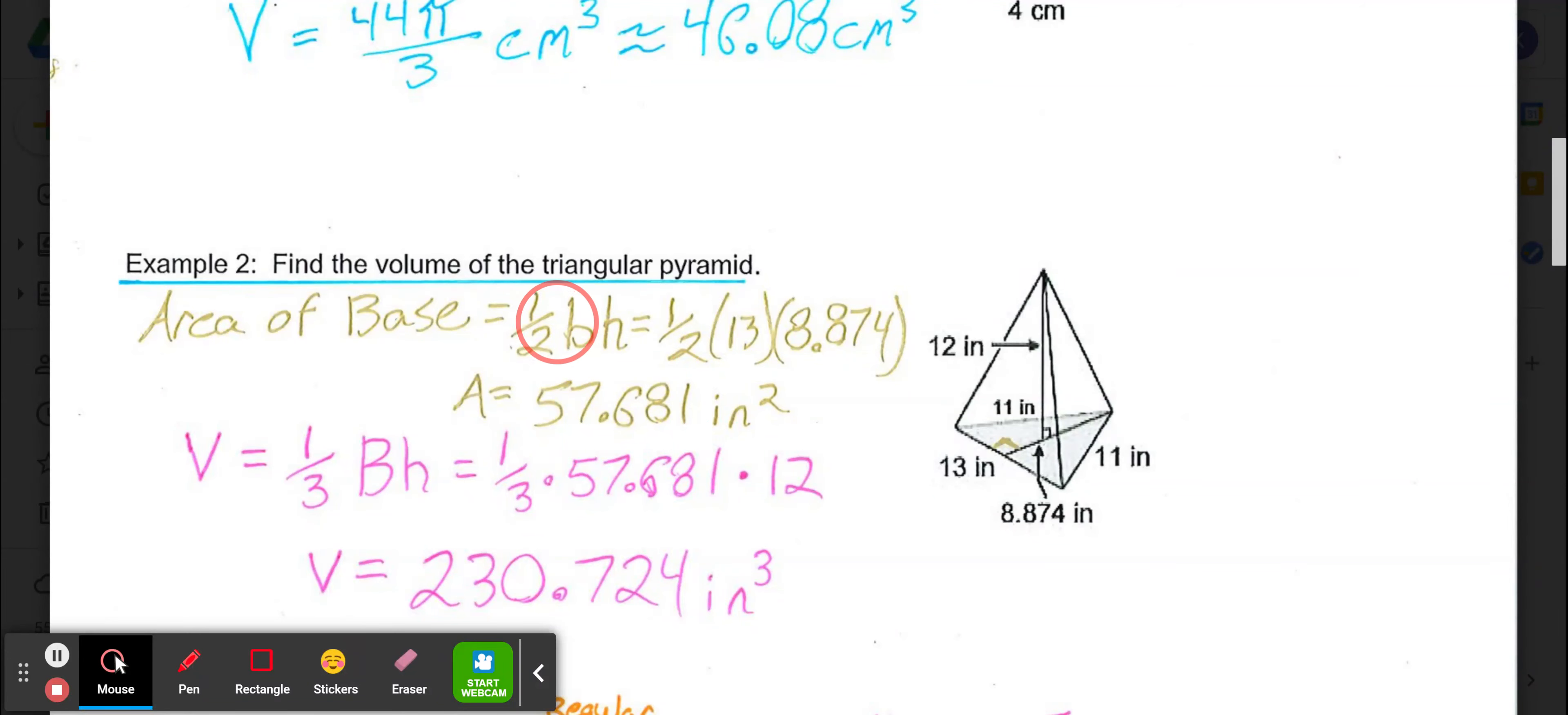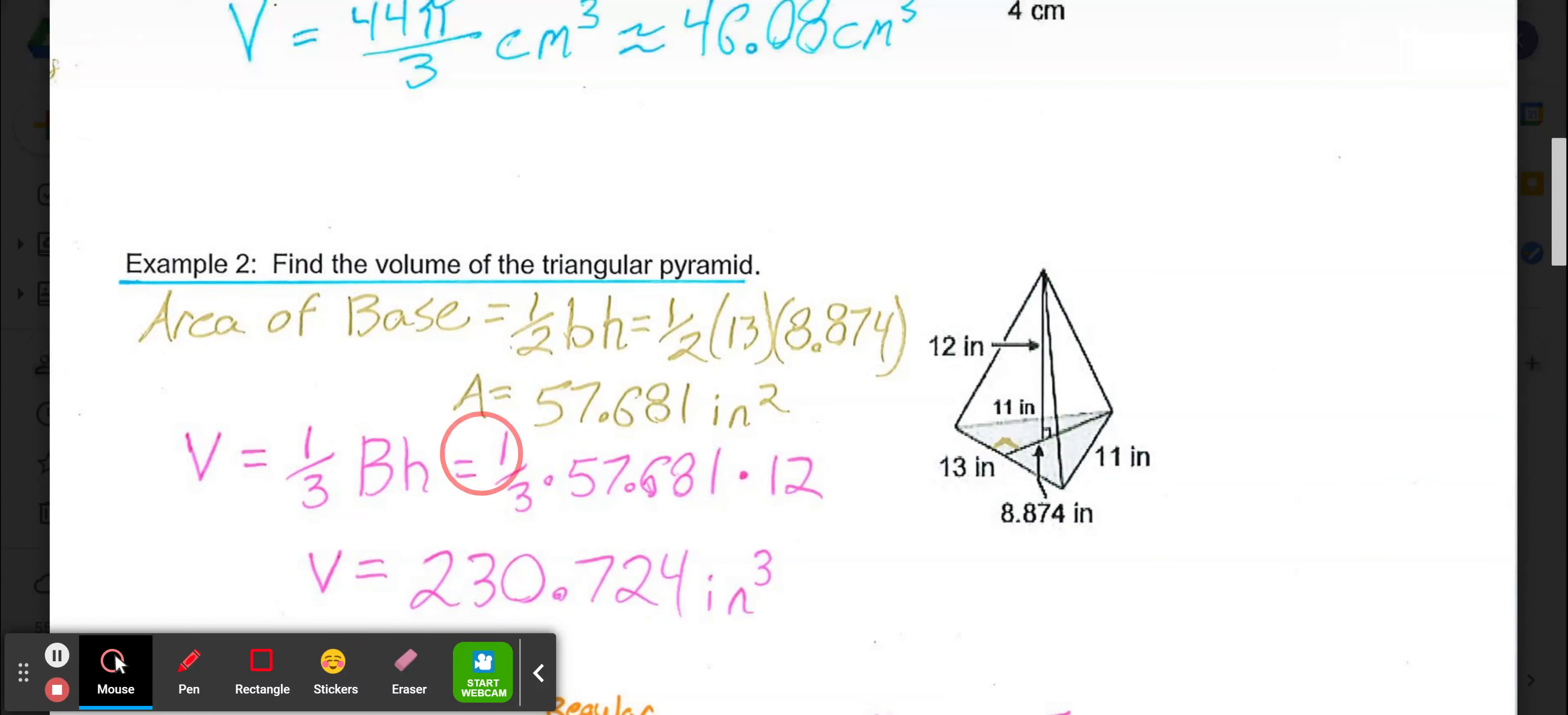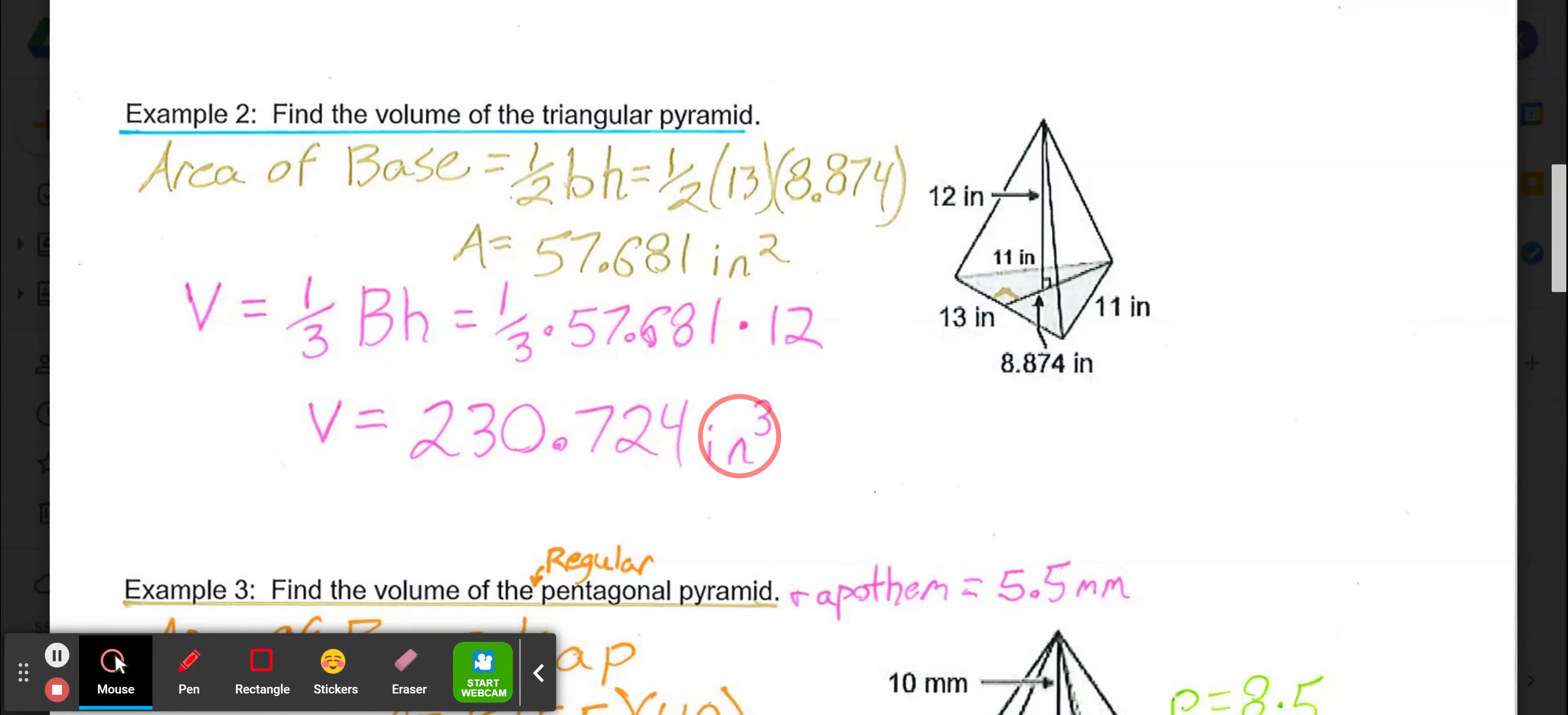Then we're going to take that area and use it in our volume formula, one-third area base times height. So one-third multiplied by 57.618 multiplied by the height of our pyramid which is 12 inches. And that gives us a final volume of 230.724 cubic inches or inches to the third power.